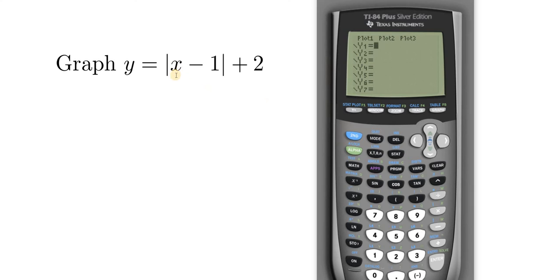Once you're here you want to select the absolute value function. To do that you have to go into the catalog. Catalog is a blue key found down here.